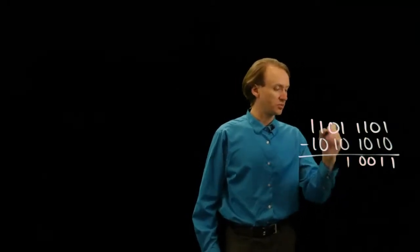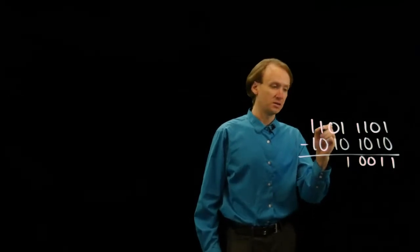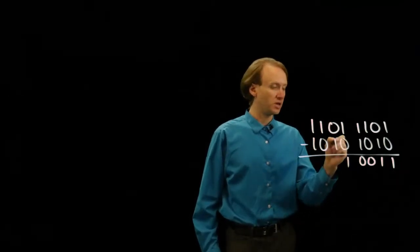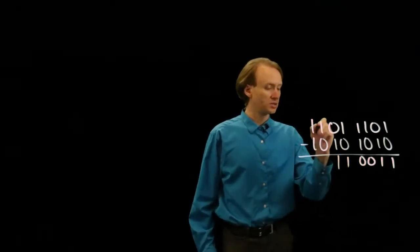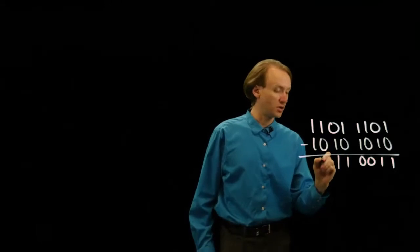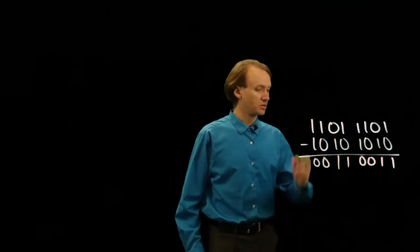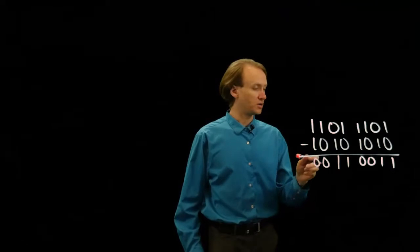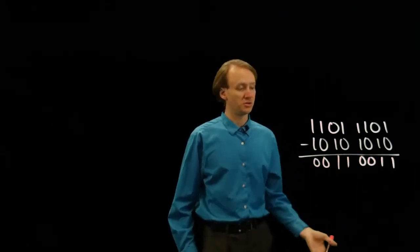0 minus 1 — well, I need to borrow something again. So 10 minus 1 gives me 1. 0 minus 0 is 0. And 1 minus 1 is 0. So with 2 binary numbers, do the subtraction, and you get your result.